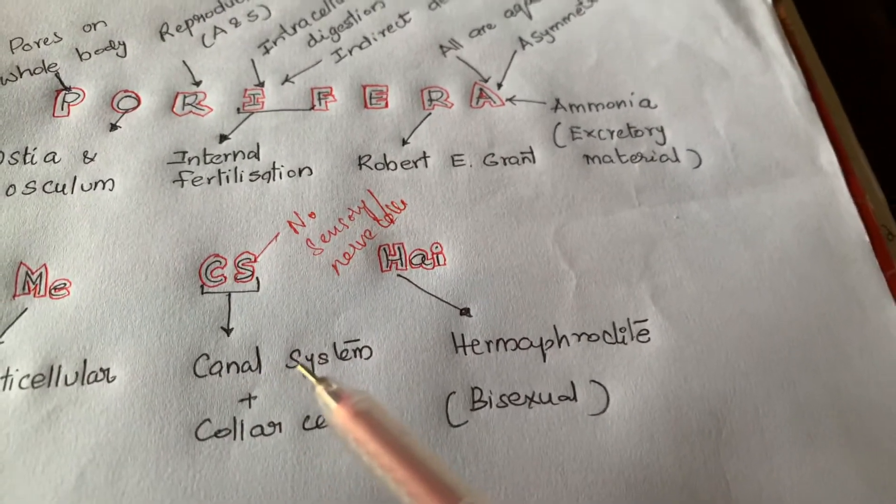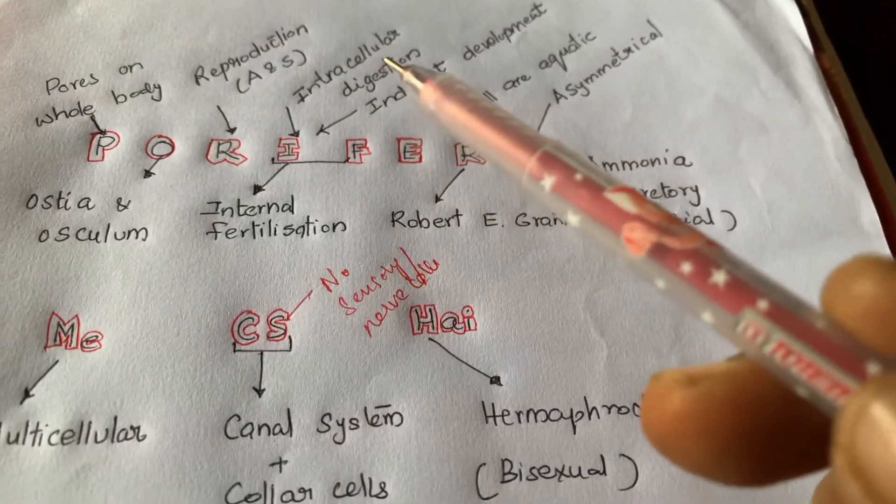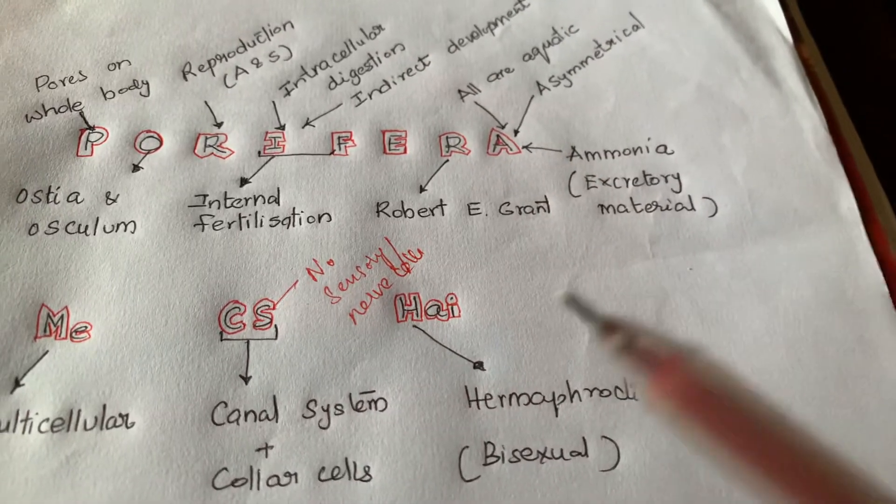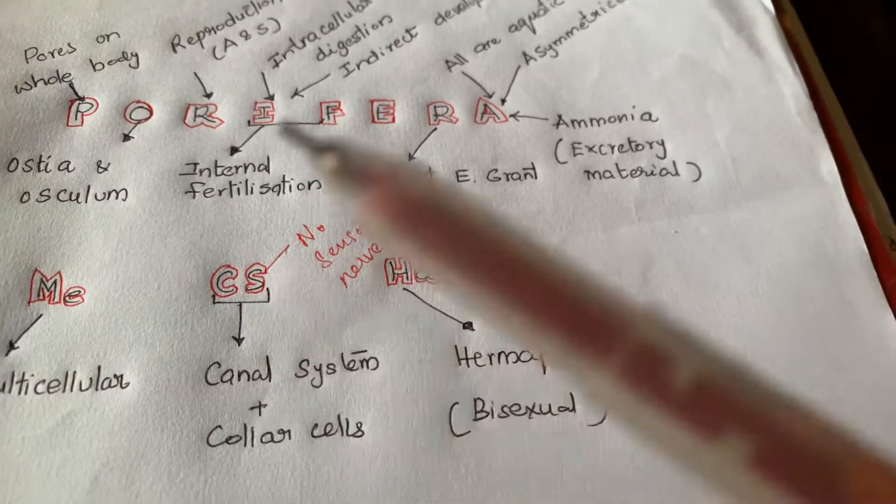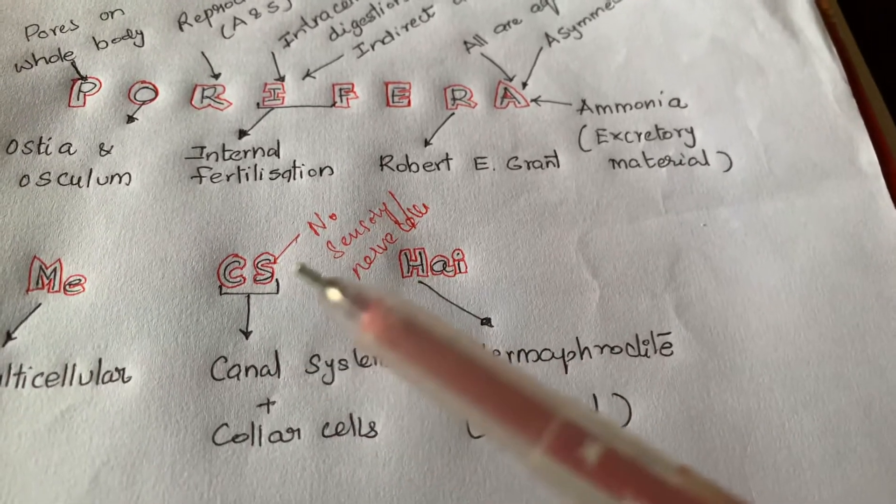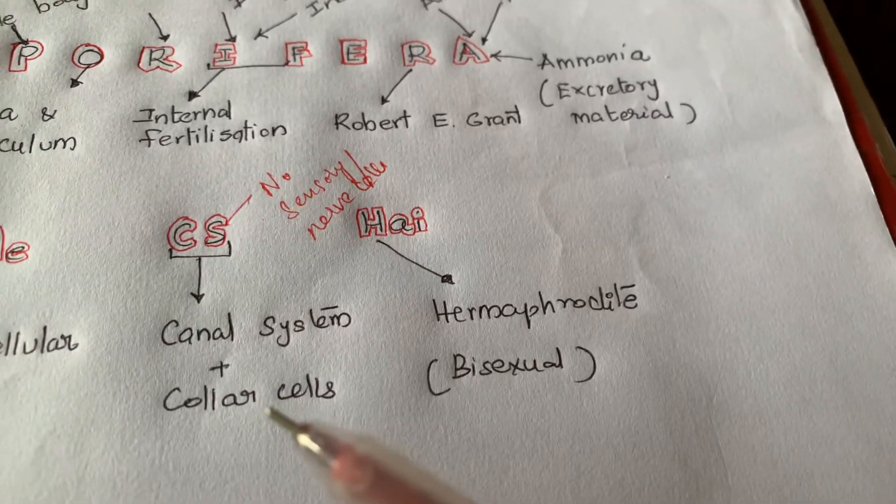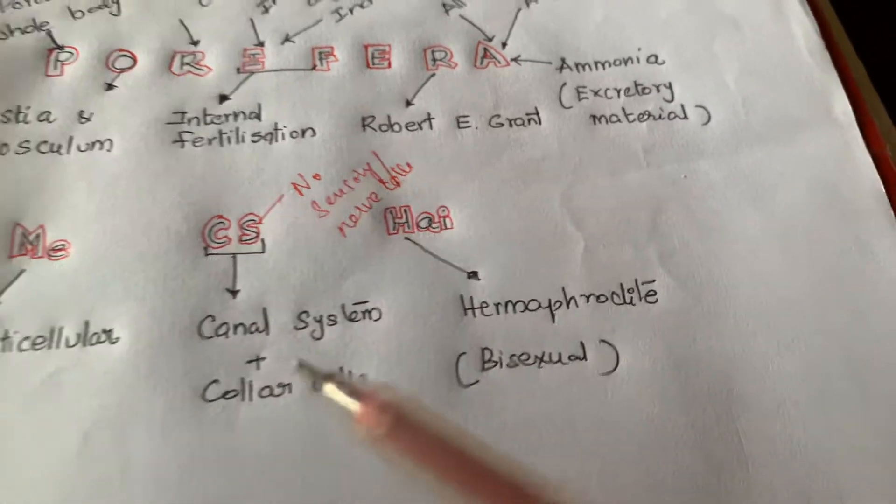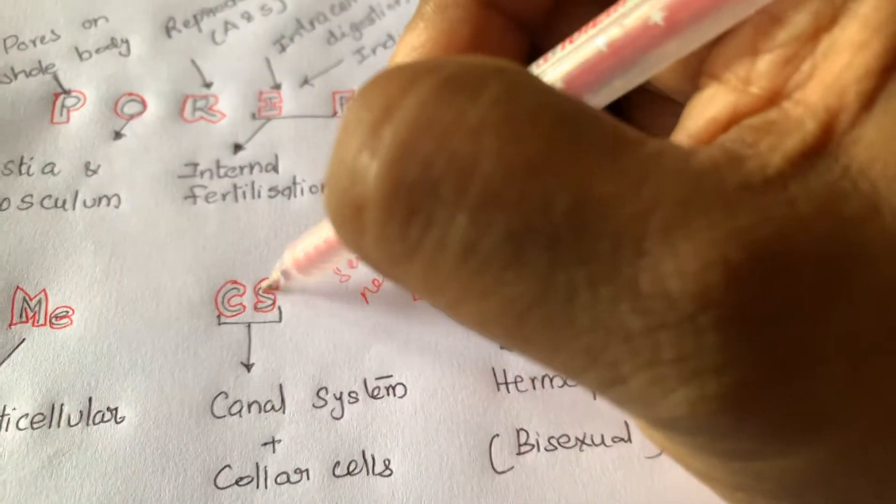Well-developed canal system is present for getting the food material and also for respiration, for taking oxygen and leaving out CO2, leaving out excretory materials, nitrogenous waste materials. The canal system is very well developed and they are lined by the central spongocoel. Here you can add spongocoel is present.